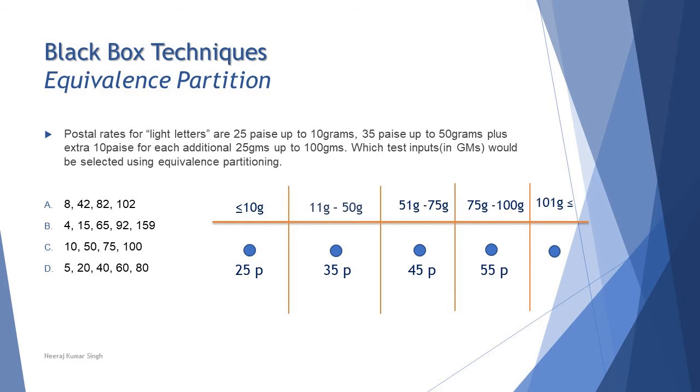Let's go for B: 4 is in the first range, 15 is in the second range, 65 is in the third range, 92 is in the fourth range, and 159 is in the fifth range. This fits absolutely fine with the expectation, so B actually covers all the options and that could be the right option.